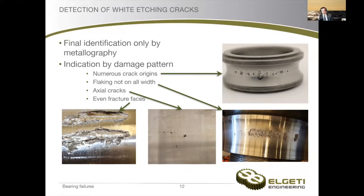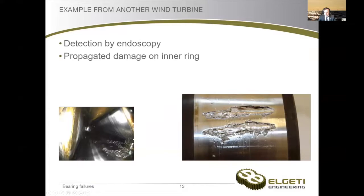Here we can see two patterns: some areas look very similar to rolling contact fatigue, but these other areas look like typical brittle failure, which shall ring the bell that we might possibly face some hydrogen embrittlement. Also, we can see that the cracks penetrated much deeper into the material, which is very untypical for rolling contact fatigue, and therefore indicates that we have a different phenomenon involved.